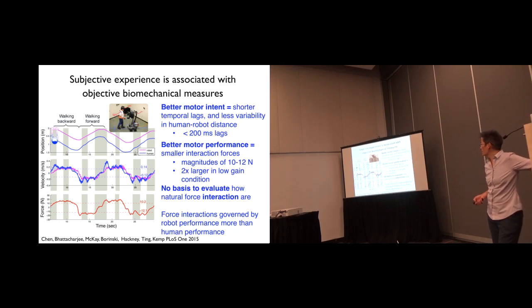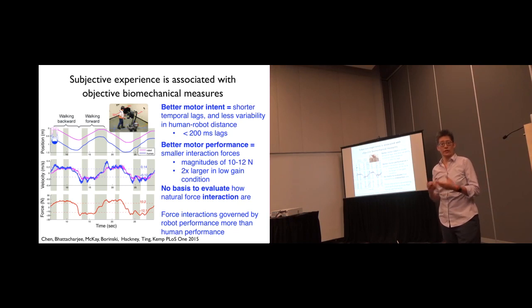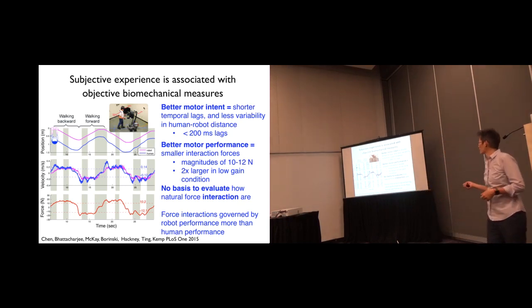So one of the takeaways is that the subjective experience was actually associated with some objective biomechanical measures, which can really help us try and design interactions. And the better motor intent was improved with shorter temporal lags, which they could sense through the forces. And better motor performance, in this case, was smaller interaction forces.